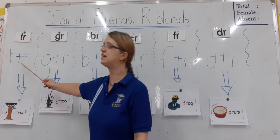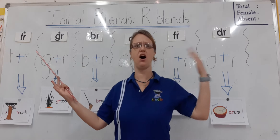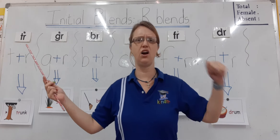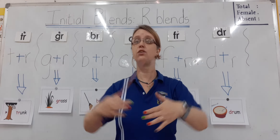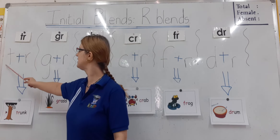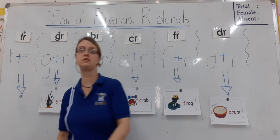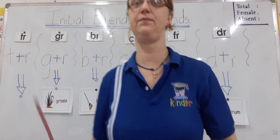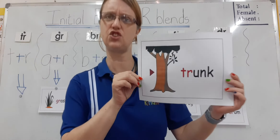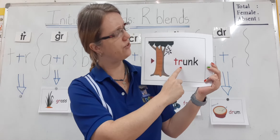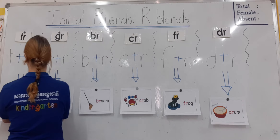Let's quickly look at TR. Which two letters make up this blend? Remember we're blending, so it's TR. T plus R gives you TR. Let me show you the picture. There we have it — a trunk. Can you see that's a tree? TR.